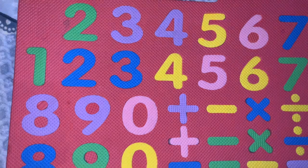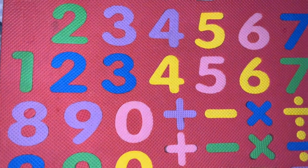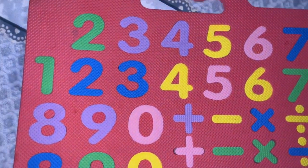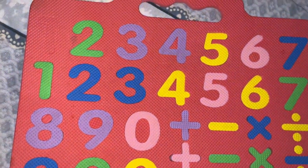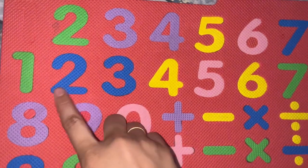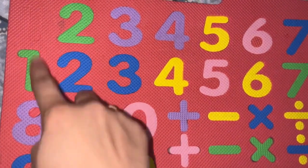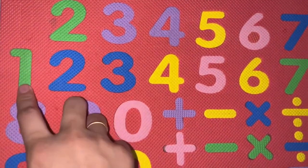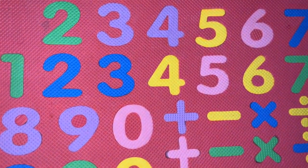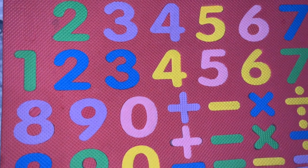The next question is: what comes before 2? So first, where is 2? Here we have 2 — and what comes before 2? 1 comes before 2. O-N-E, 1.